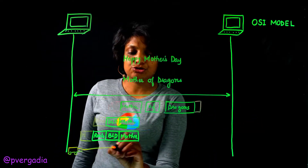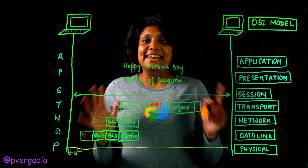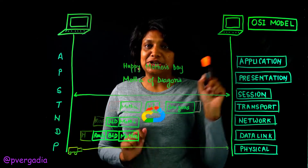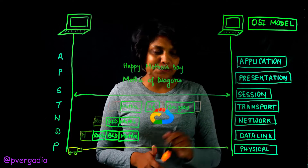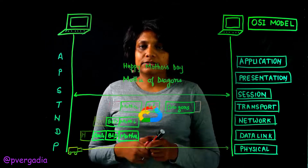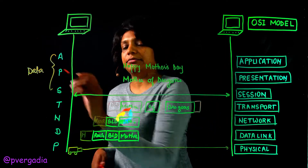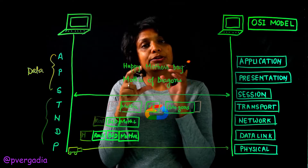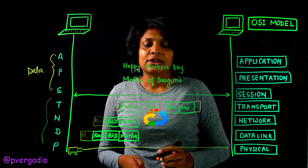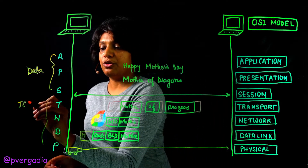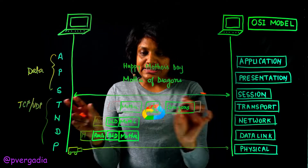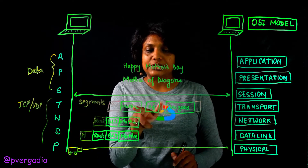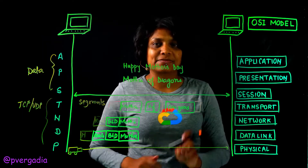If we parse this example in technical OSI model terms, the layers are: Application, Presentation, Session, Transport, Network, Data Link, and Physical. The first three are really about data and the application. Starting from the Transport layer onwards, data converts into smaller units. The Transport layer is where TCP and UDP come into play and where data is broken down into segments — just like 'Mother,' 'of,' and 'Dragons.'